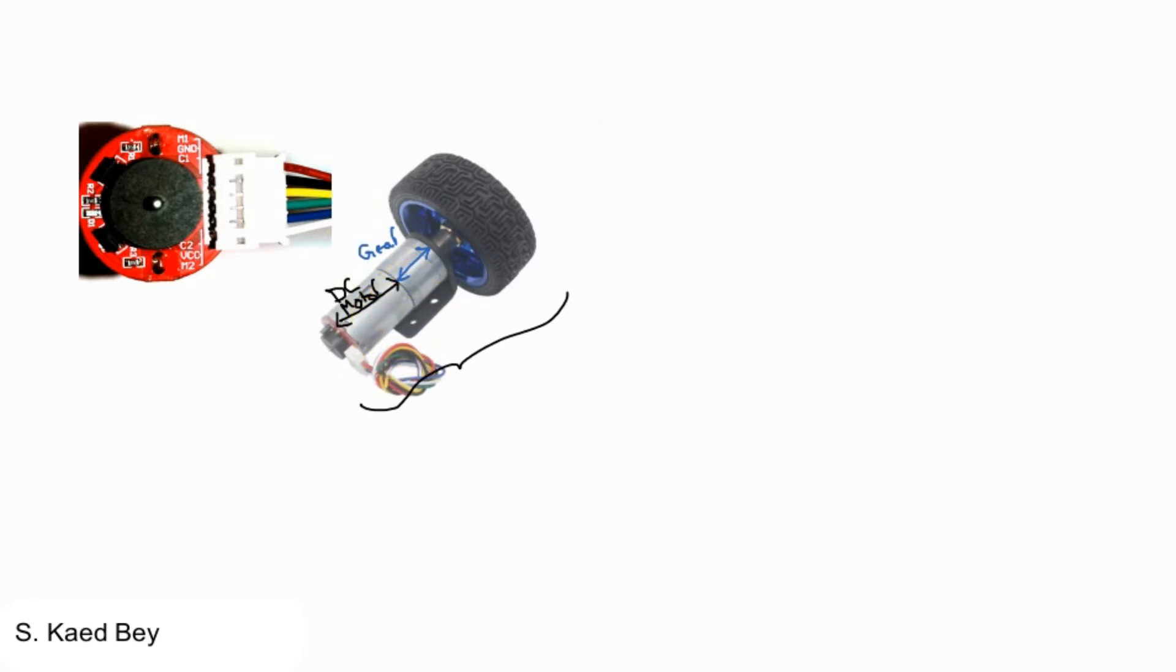And the last part is the encoder. This is your sensor. So the encoder converts information from one format into another. Same way your speaker converts an electrical signal into music, this electromechanical device converts the angular position of your DC motor shaft into an electronic signal.